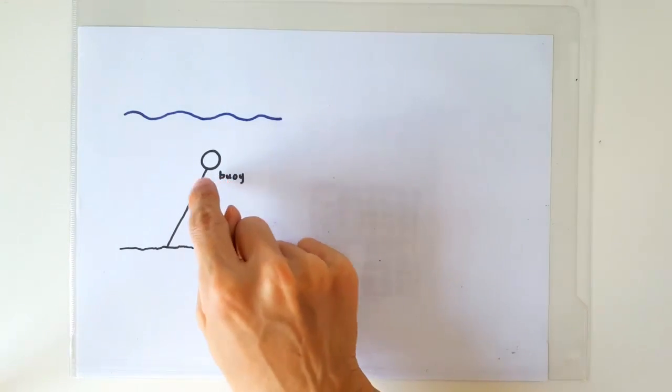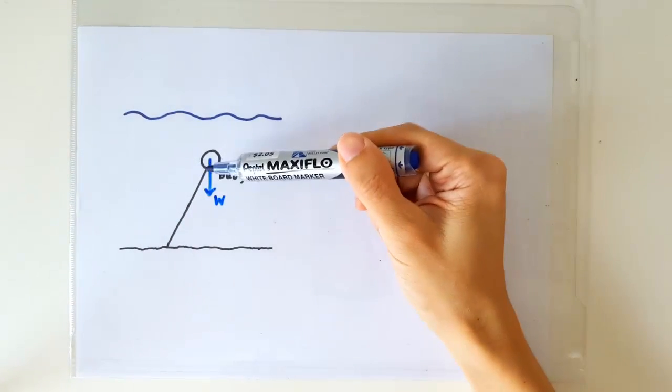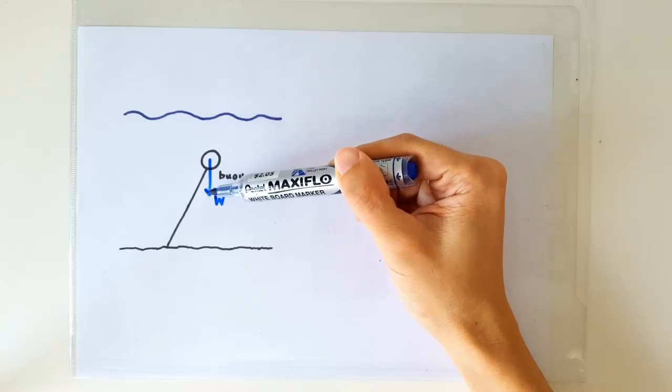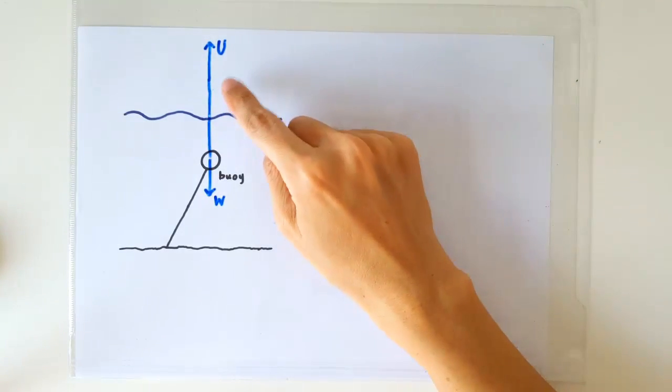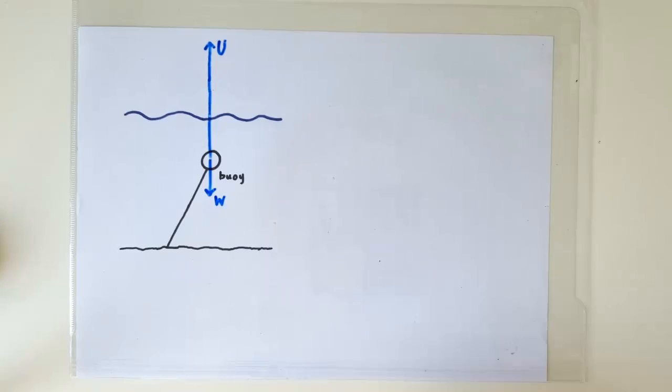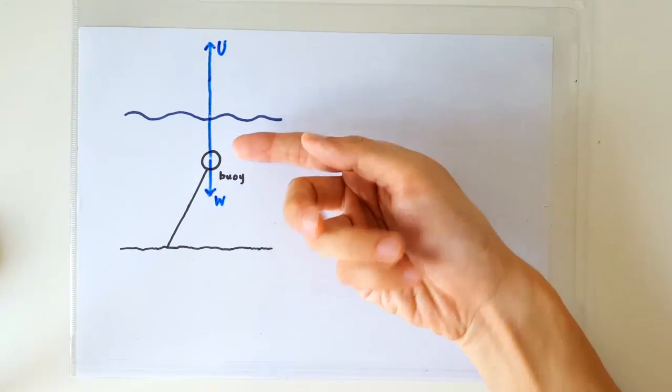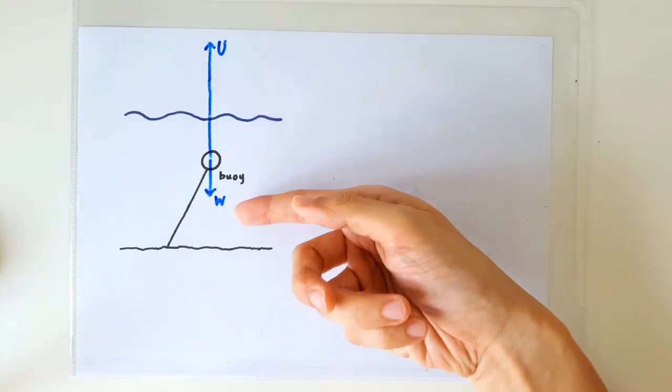What are the forces acting on the buoy? There is of course the weight of the buoy, acting vertically downward. There is of course the upthrust, acting vertically upward. Since the buoy is designed to float, the upthrust should be much larger than the weight.